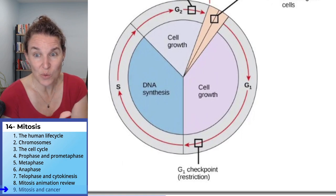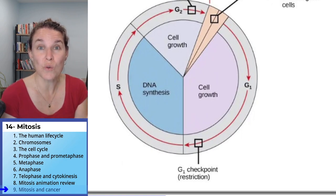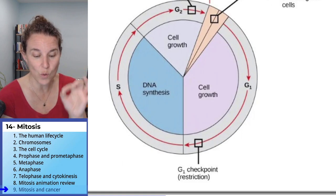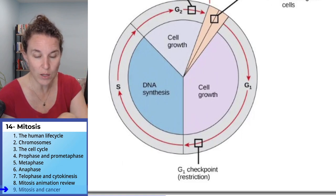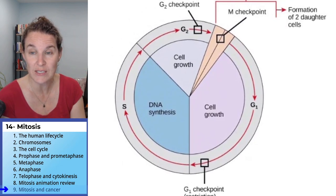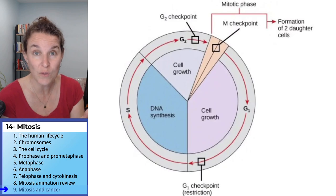And you end up with too many cells. Cancer cells don't follow the rules of the cell cycle, and they don't follow the checkpoints.